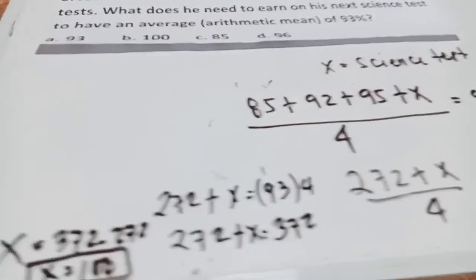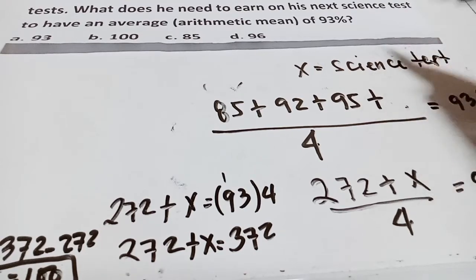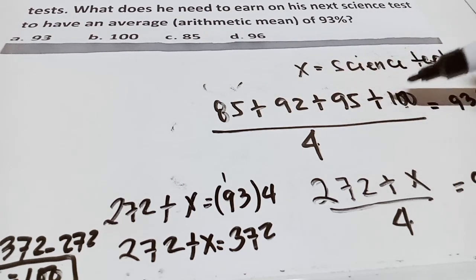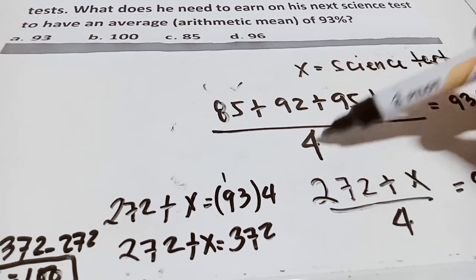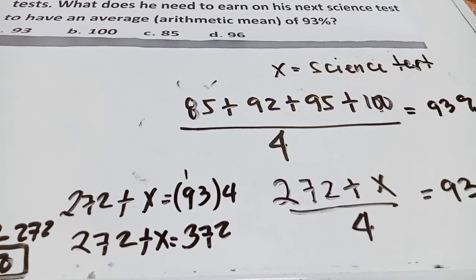Take note guys, x, you will transpose 372 minus 272, and the missing number is 100. The answer is 100. Let's try to check: 85, 92, plus 95, plus 100, divided by 4. The answer is 93%. That will be the answer.